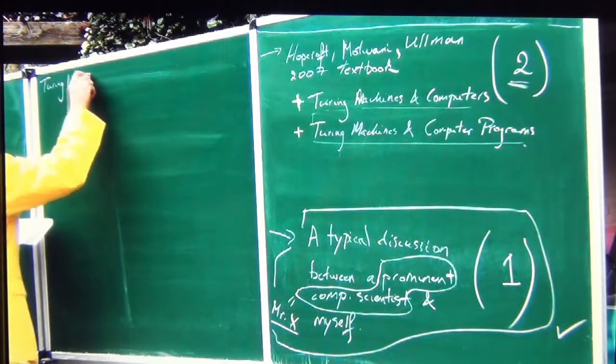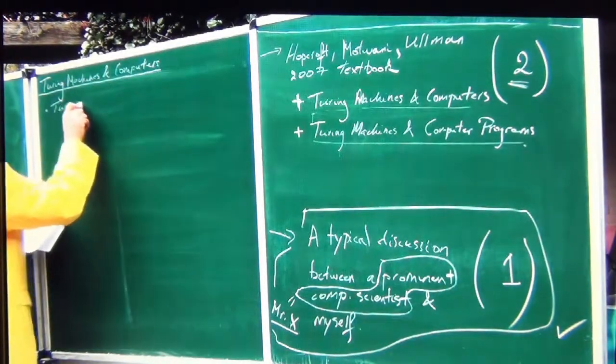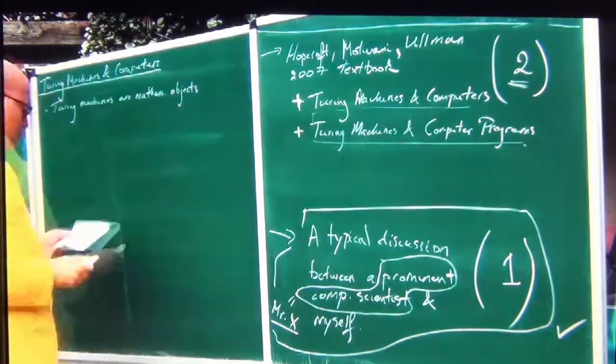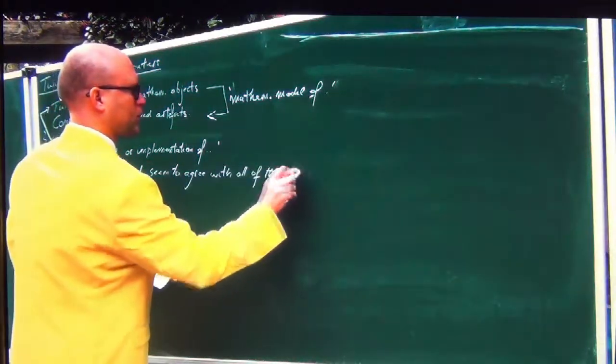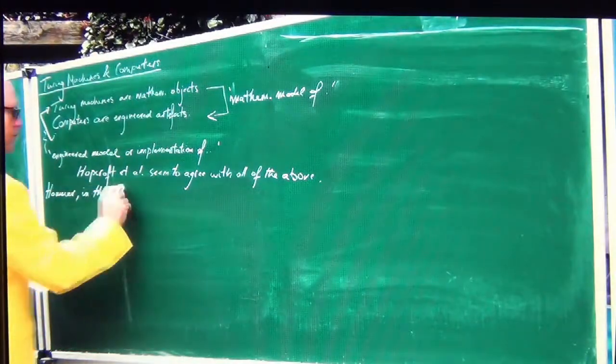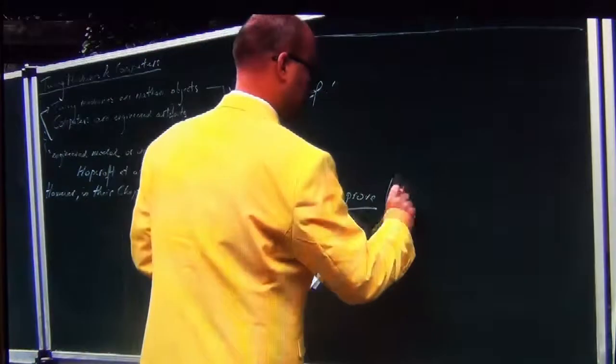Turing machines are mathematical objects; computers are engineered artefacts. So mathematical objects can serve as a mathematical model of engineered artefacts, and engineered artefacts — computers — implement Turing machines. A computer can be viewed as an engineered model or implementation of a Turing machine. Hopcroft et al. seemed to agree with all of the above, because there's nothing controversial about what I just said. However, in chapter 8, Hopcroft et al. also attempt to mathematically prove, or argue informally, that a computer can simulate a Turing machine and that a Turing machine can simulate a computer — standard textbook material.